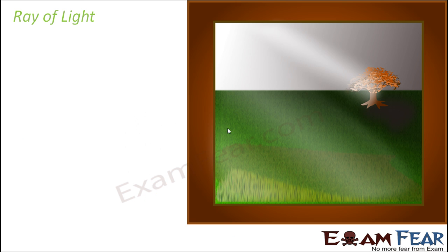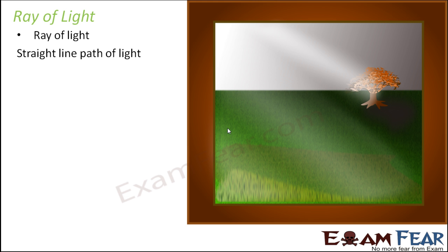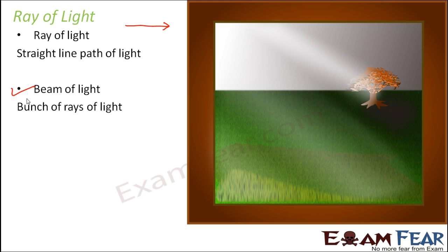Before we go ahead with the properties of light, let us talk about a ray of light, because it is a term we will be using very often. A ray of light is a single straight-line path of light that denotes the direction in which light is moving. When we say beam of light, it actually means a bunch of rays of light — when too many rays are together, they form a beam of light. A beam of light is a collective term representing stronger intensity. That is how we differentiate between a ray of light and a beam of light.